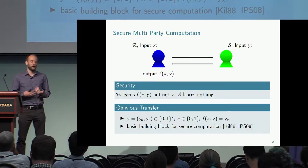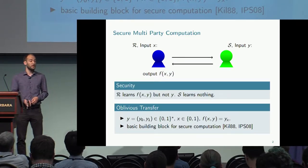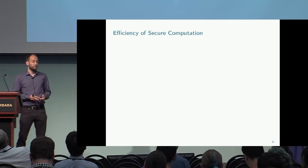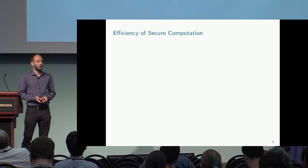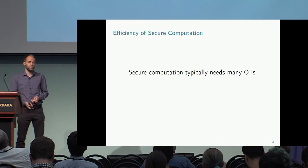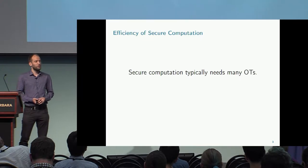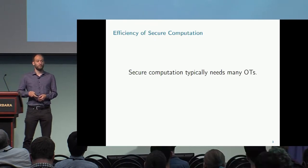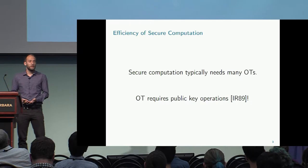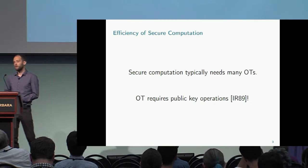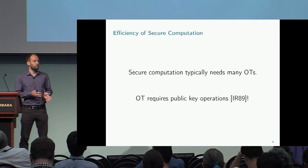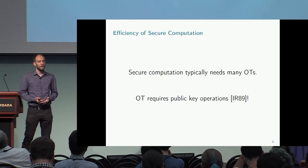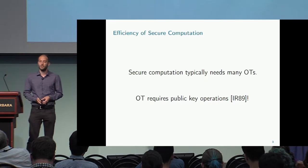There is still a bottleneck to consider, and that is efficiency. How efficiently can we realize secure multi-party computation when we use oblivious transfer as the fundamental building block? The first observation is that secure computation typically needs a large amount of oblivious transfers — usually several thousands. Another bottleneck is that oblivious transfer implies key exchange, requiring public key operations, because key exchange was separated from one-way functions by the result of Impagliazzo, Luby, and Rudich. This is really one of the main obstacles for realizing secure MPC in practice.